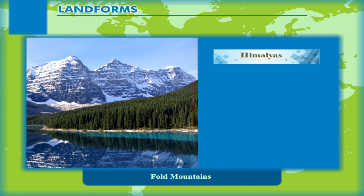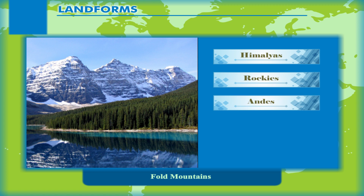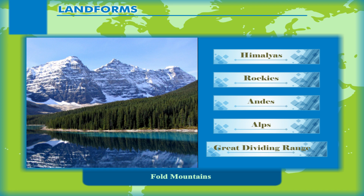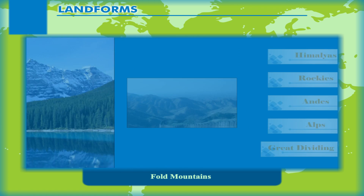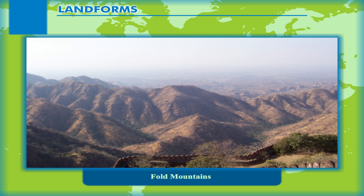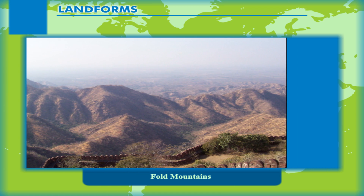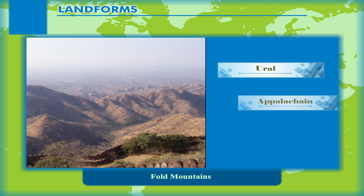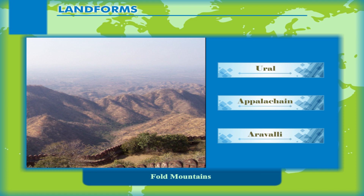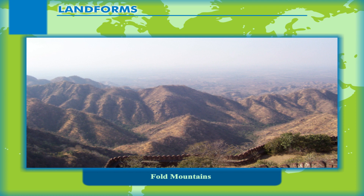The Himalayas of India, the Rockies of North America, the Andes of South America, the Alps of Europe, and the Great Dividing Range of Australia are some examples. Fold mountains formed in earlier geological time have now become eroded and reduced in size — these are called Old Fold Mountains. Examples are the Ural Mountains in Russia, the Appalachian Mountains on the east coast of the USA, and the Aravalli Range in central western India. These are the oldest fold mountain systems in the world.